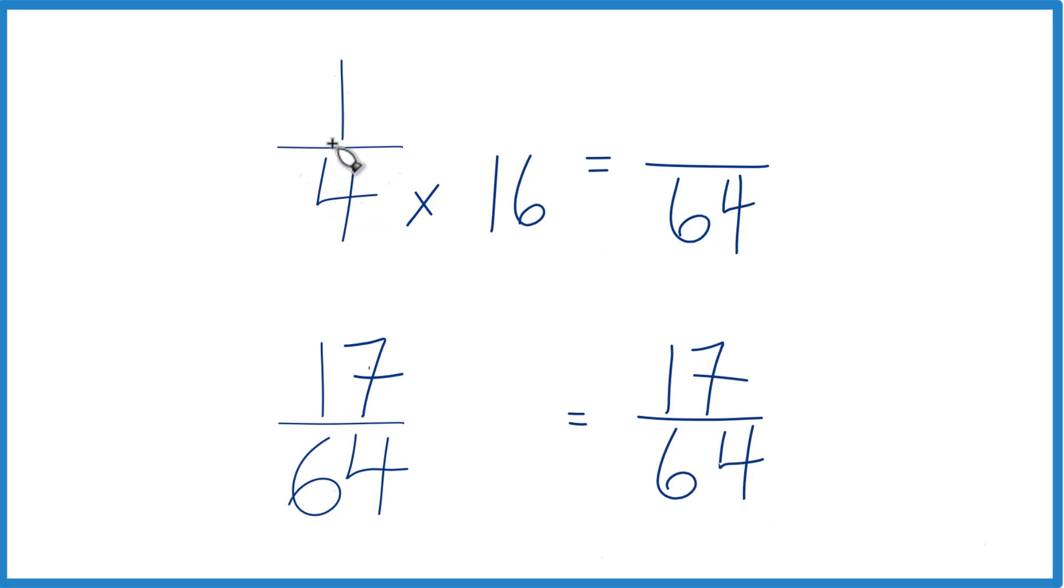So since I multiplied the denominator here by 16, I do need to multiply the numerator by 16. 16 over 16, that just equals 1, so I'm multiplying this by 1. Don't change the value, just the way it's represented.